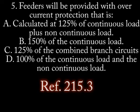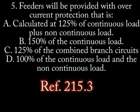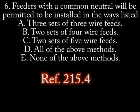Number 5: Feeders shall be provided with overcurrent protection that is: A. Calculated at 125% of the continuous load plus the non-continuous load. B. 150% of the continuous load. C. 125% of the combined branch circuits. D. 100% of the continuous load and the non-continuous load.